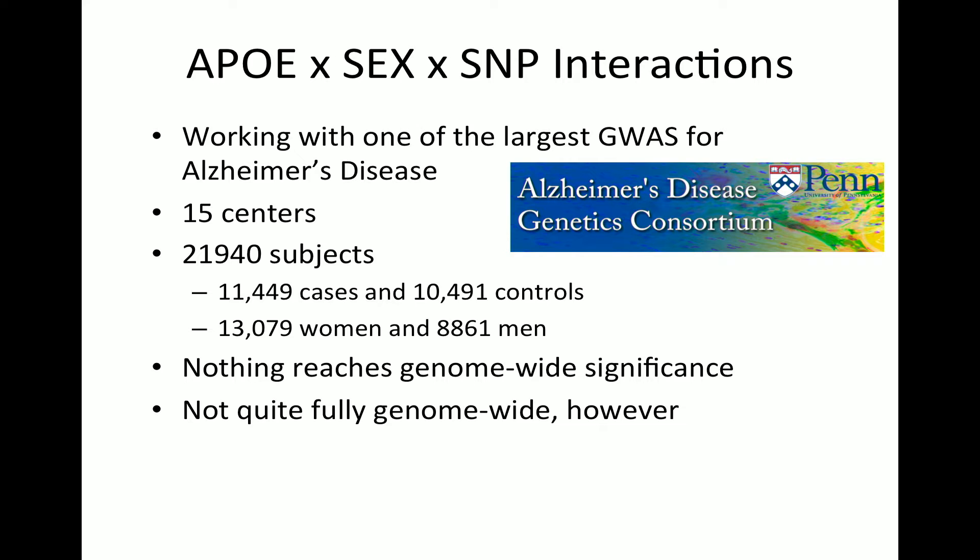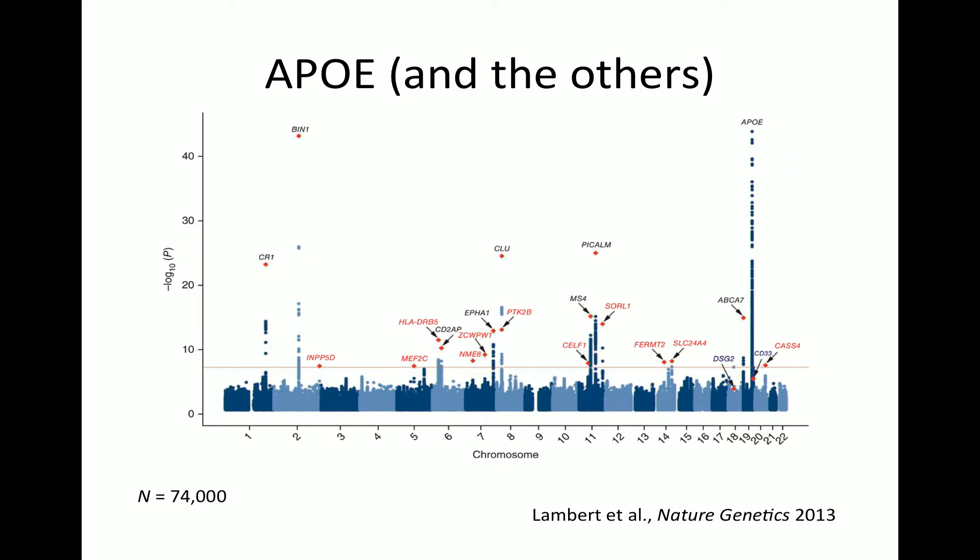Here's a point that might blow people's minds: these studies called GWAS are not actually genome-wide — I'd say 99% of them aren't. Here's that same Manhattan plot with APOE on chromosome 19, but what people never show is the sex chromosome data. Going through these GWAS studies, it very slowly dawned on me that none of the big Alzheimer's GWAS studies included the X chromosome. That seems odd given that there are roughly 2,000 genes on the X chromosome, many of which are critical for cognition.